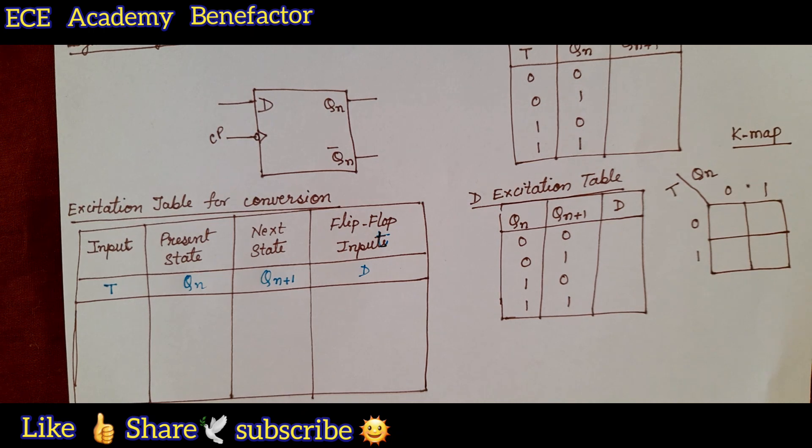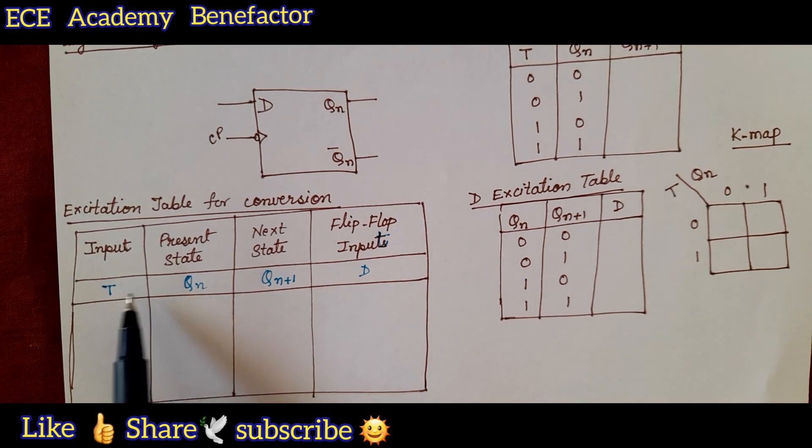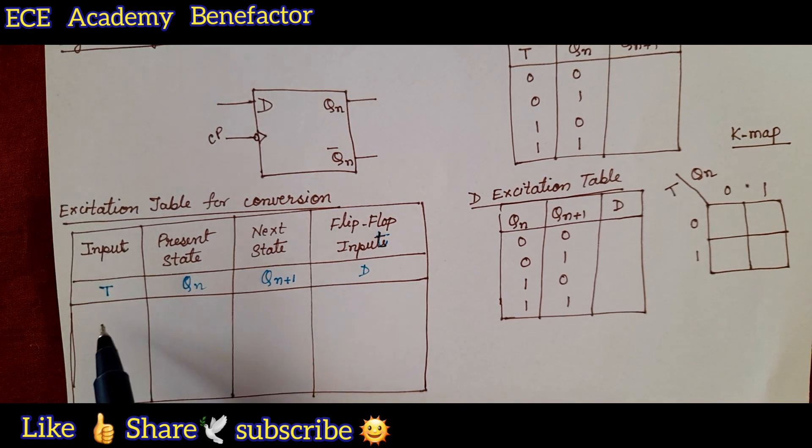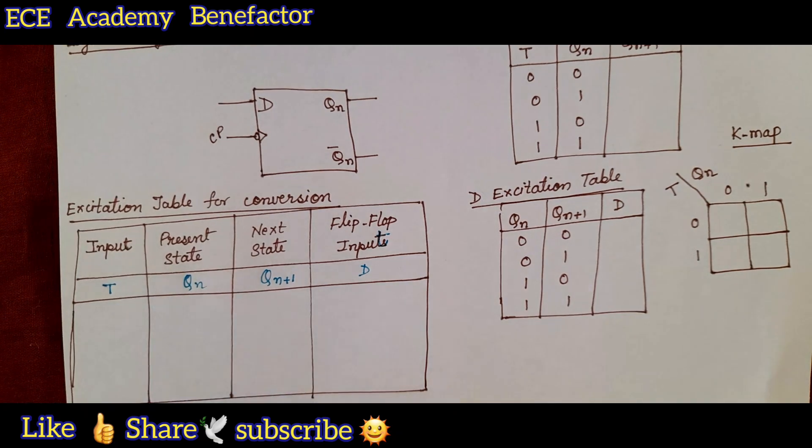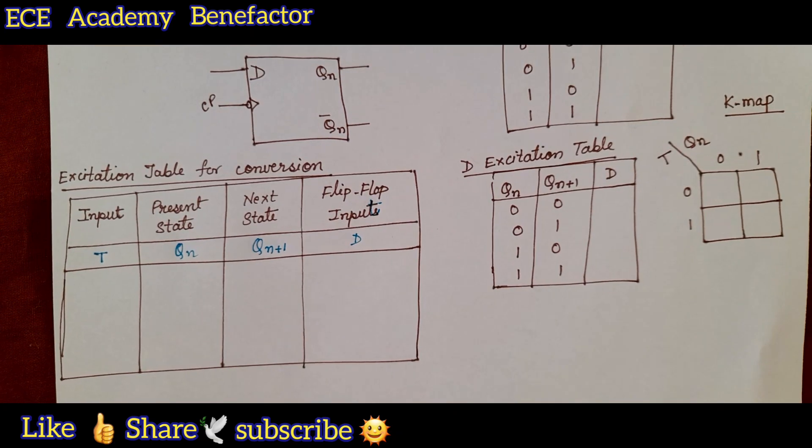The 4 columns are input, present state, next state and flip-flop input. Now, for these 2 columns we need to write the binary combinations. For 2 variables we can write 4 possible combinations.